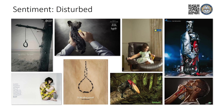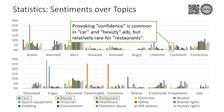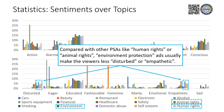We observed some interesting trends in the sentiments ads provoke. For example, confidence is used in car and beauty ads, but not as common in restaurant ads. Environment protection ads make the viewer less uncomfortable or empathetic, compared with other public service announcements.